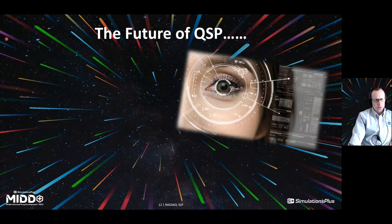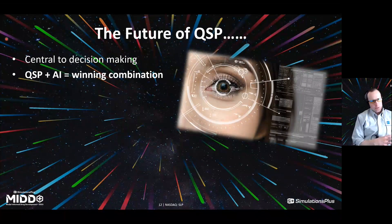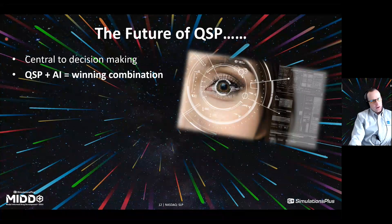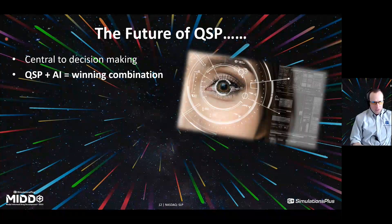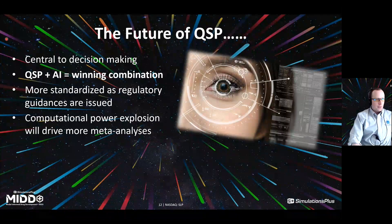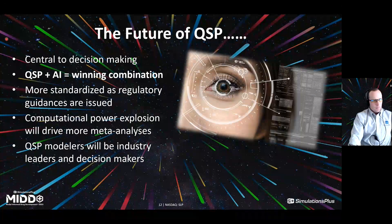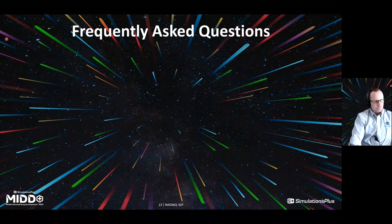Let's talk for a moment about the future of QSP. I think we'll see QSP becoming more and more central to decision making. I think AI and QSP together will be a winning combination — AI is very powerful with the amount of data we're generating, and QSP perfectly complements AI in that it allows us to provide biological plausibility, which is certainly a required thing in many settings. I think you'll see more standardized methods in QSP as regulatory guidances are issued. Computational power will continue to explode, driving larger and larger analyses of larger and more inclusive datasets. And QSP modelers will continue to be industry leaders and decision makers, which will only spur more QSP work.